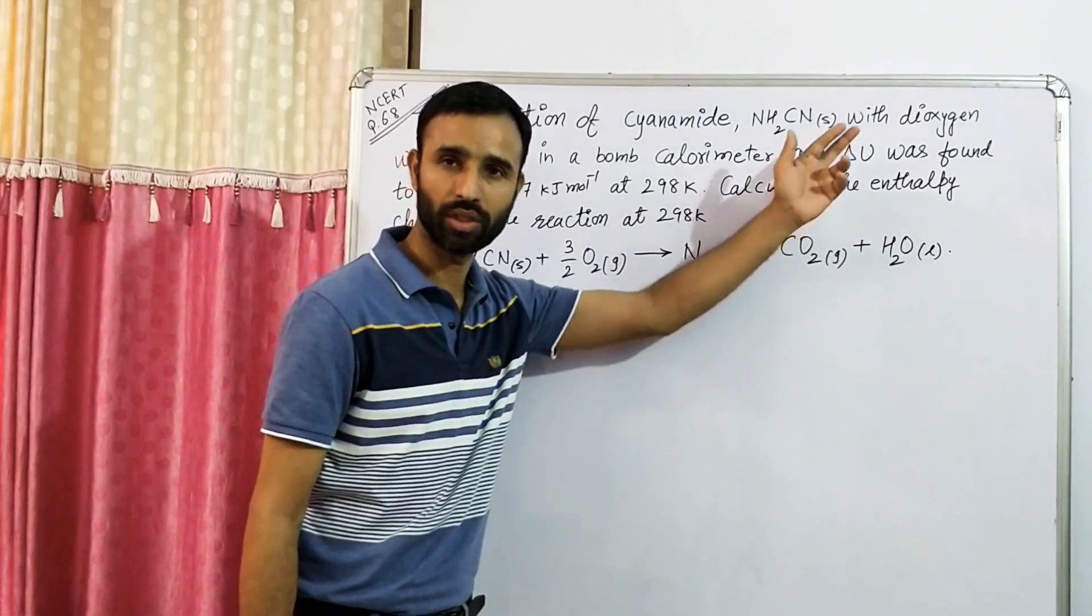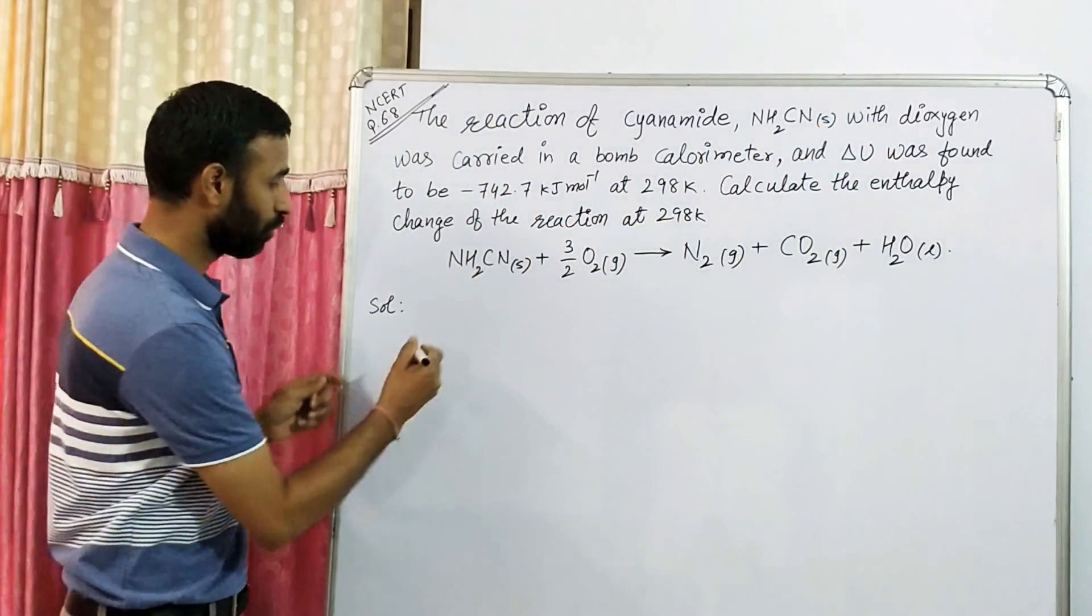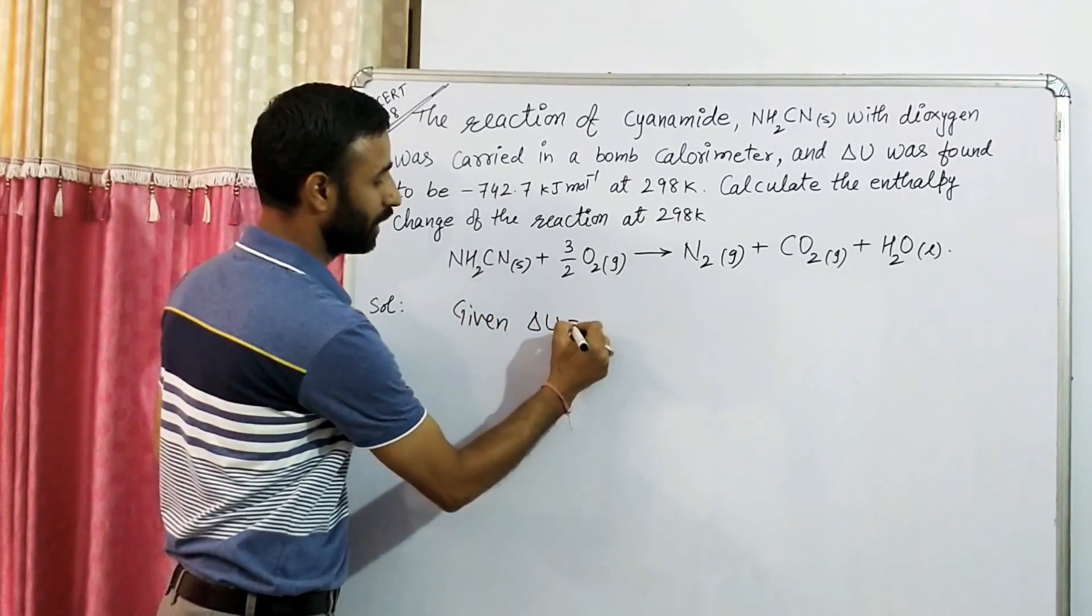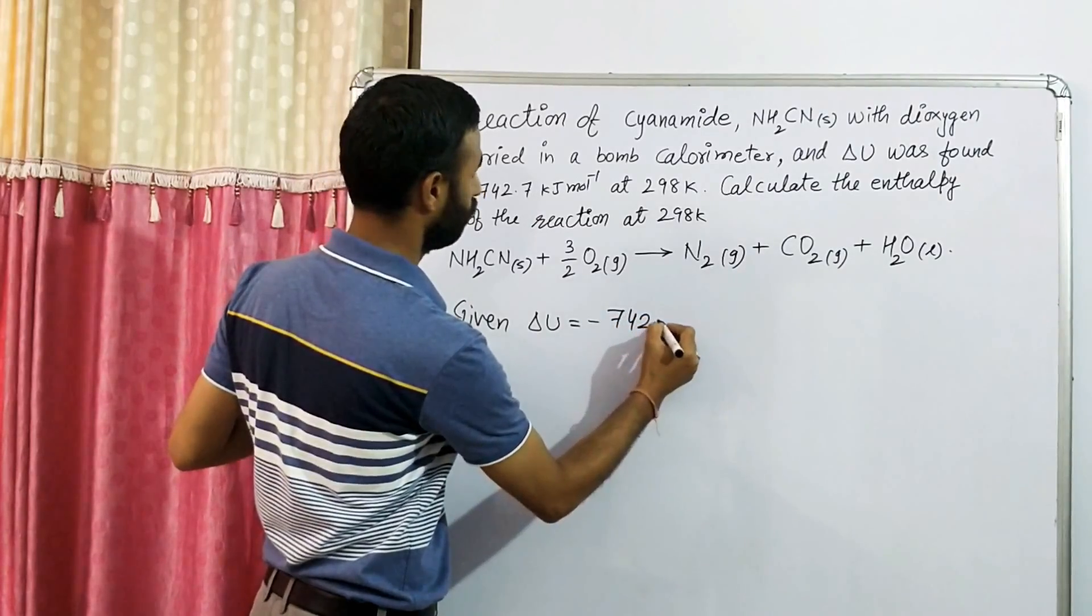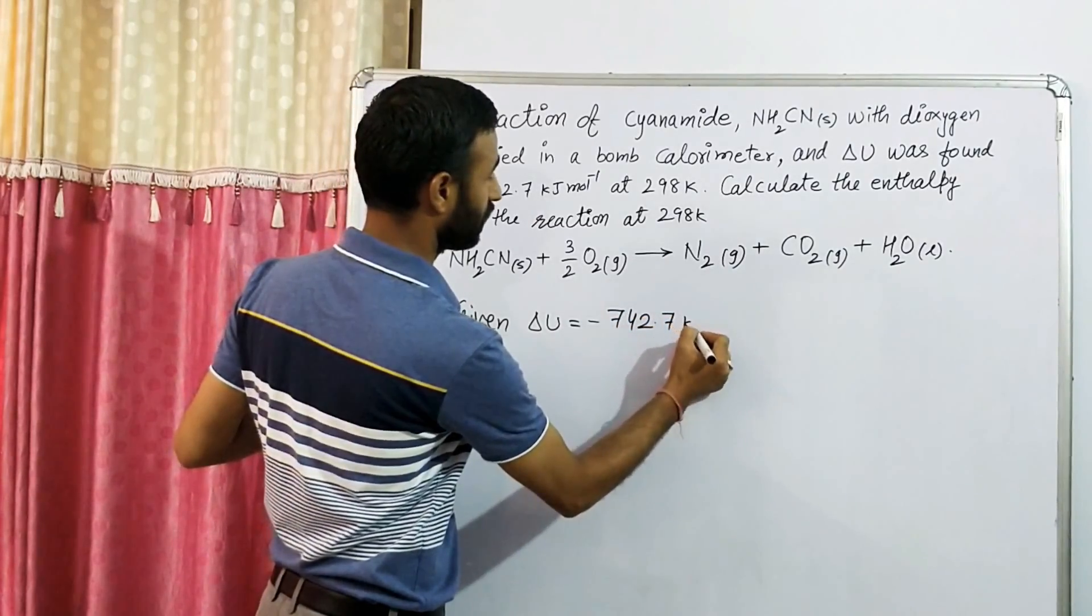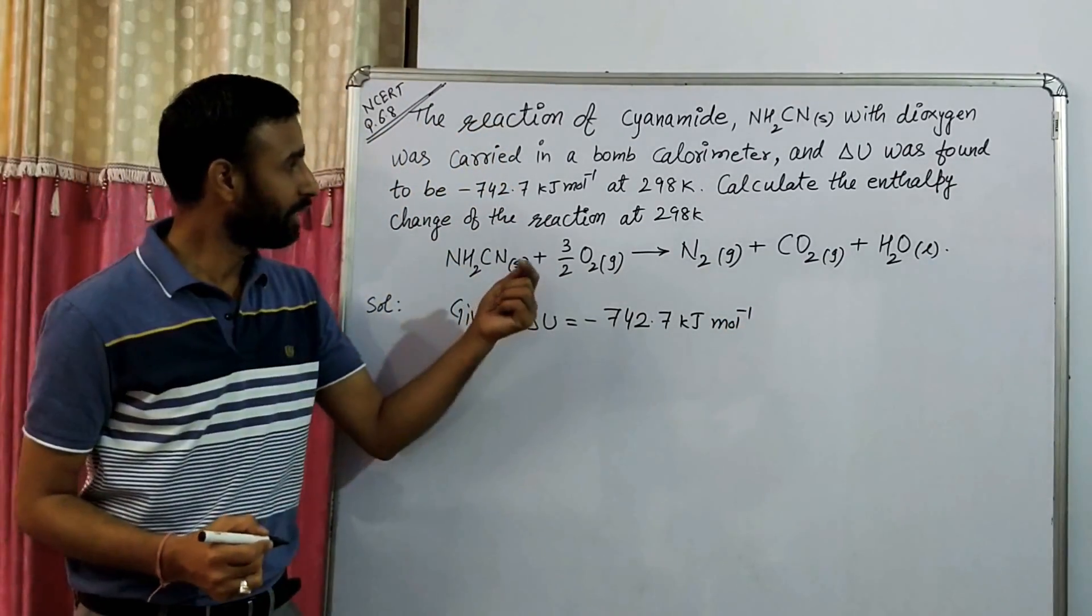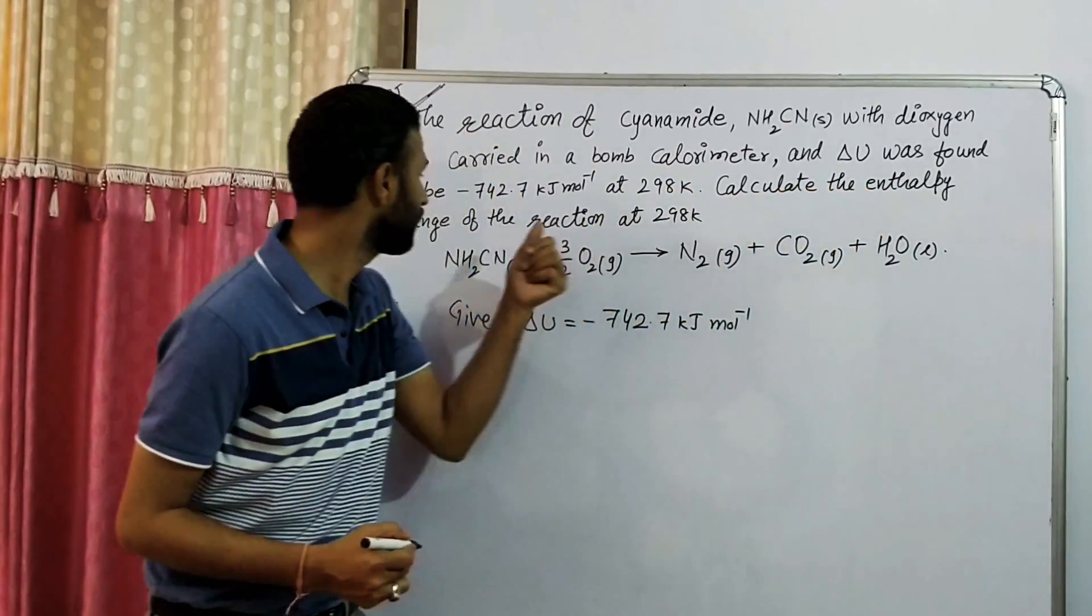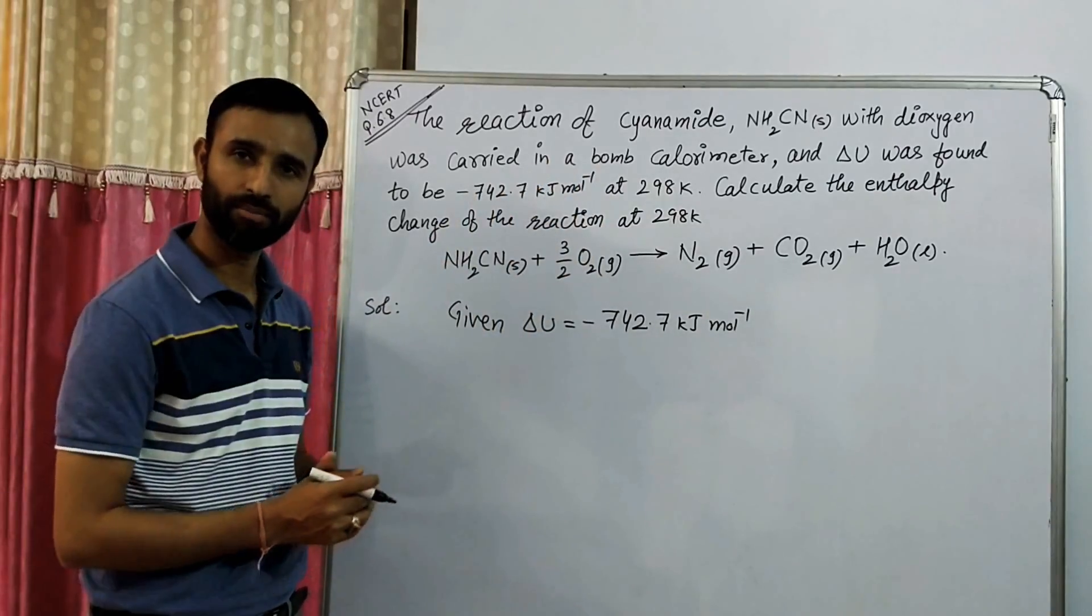Energy absorbed or released at constant volume is known as delta U. You have been given the delta U value, and delta U value is minus 742.7 kilojoules per mole at temperature 298 Kelvin. We have to calculate enthalpy change of the reaction at the same temperature.